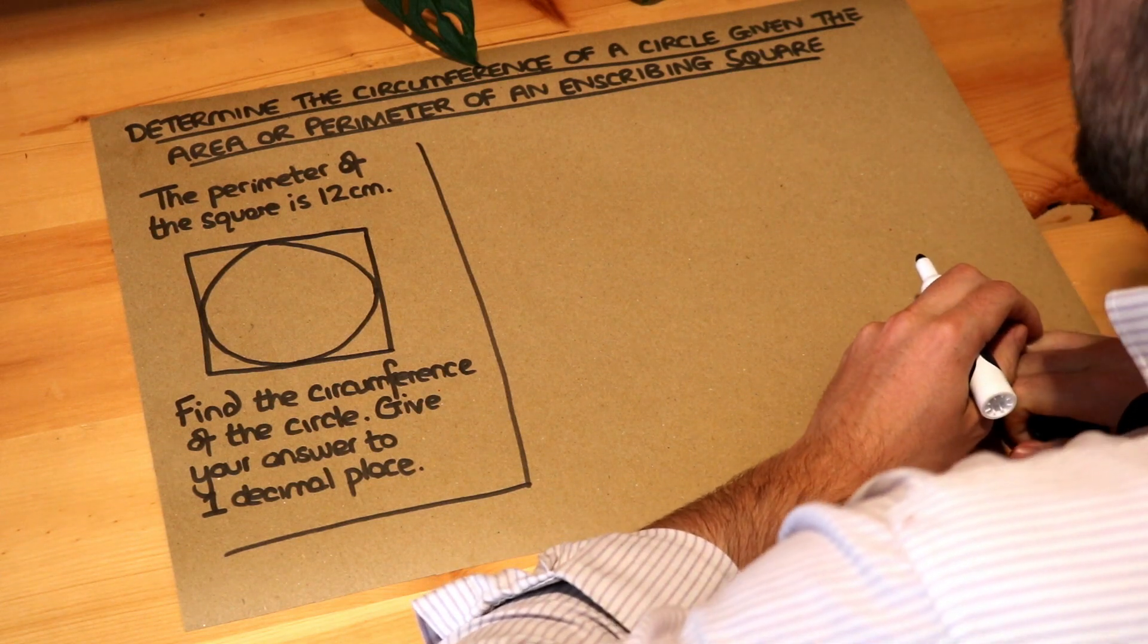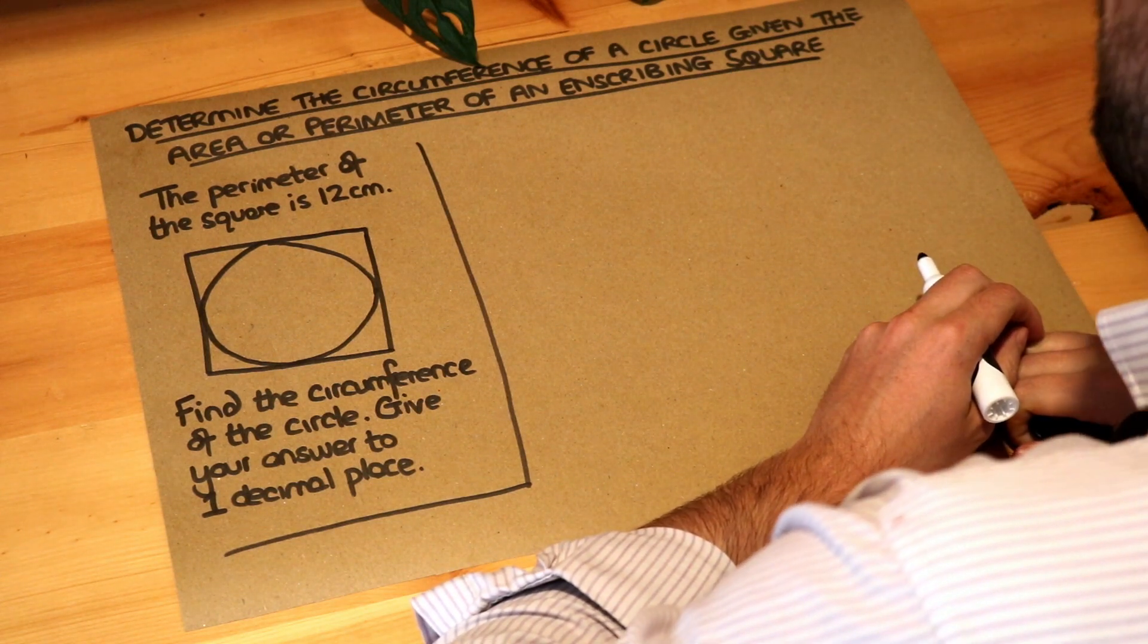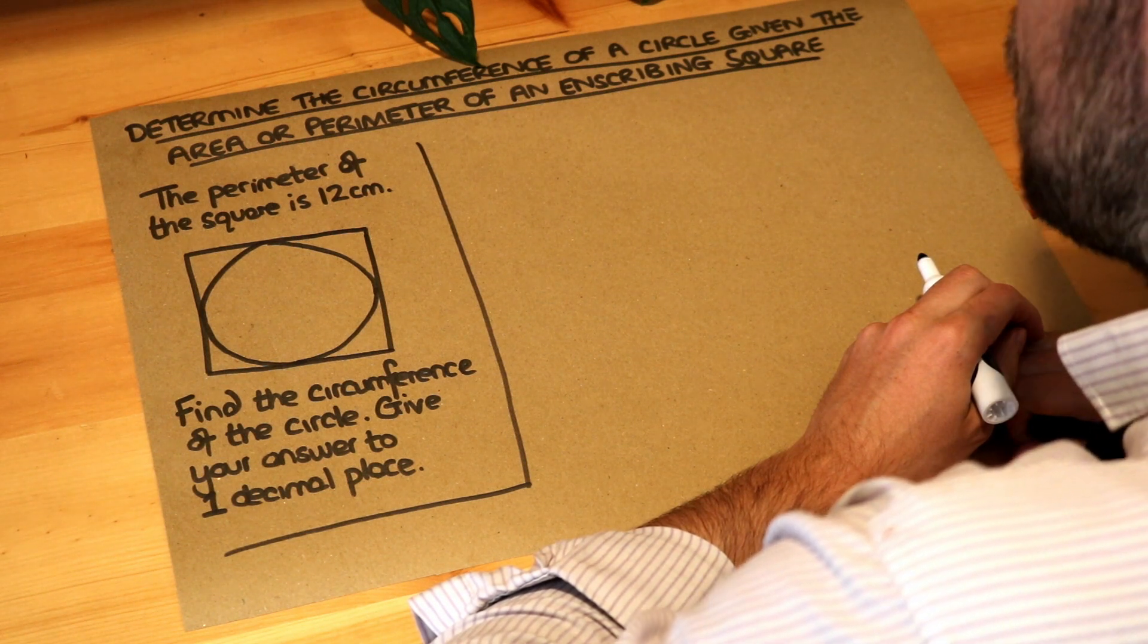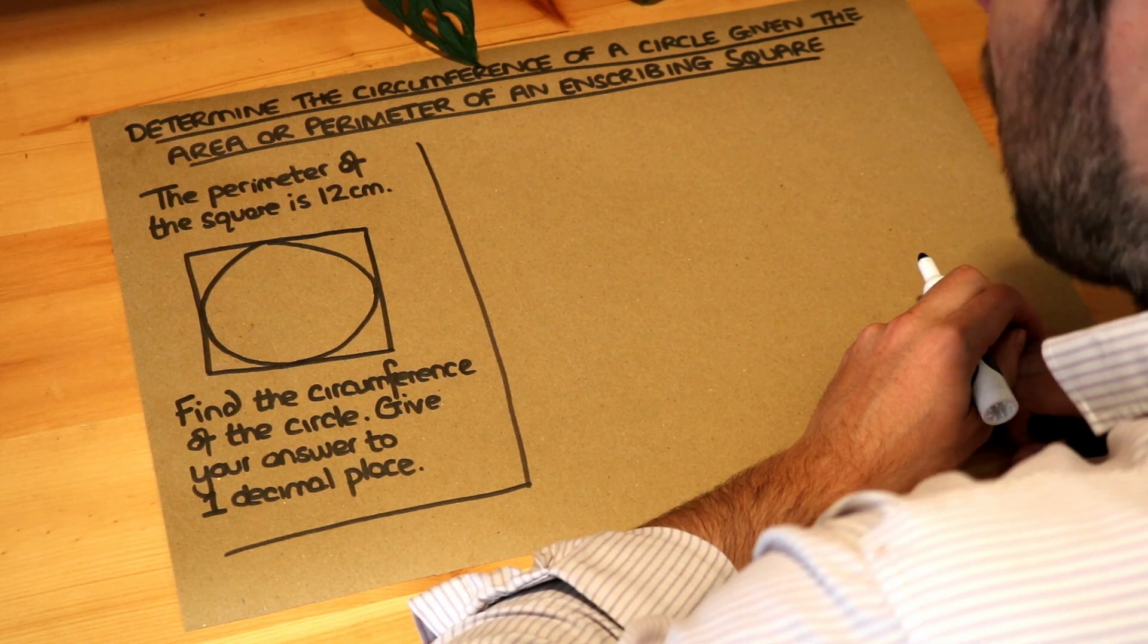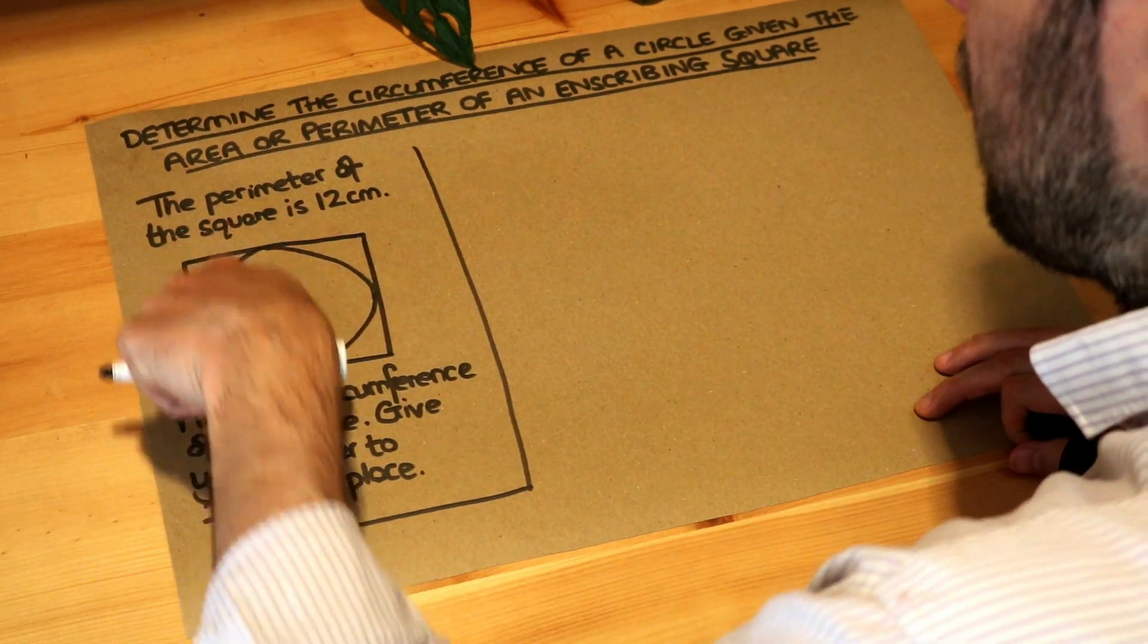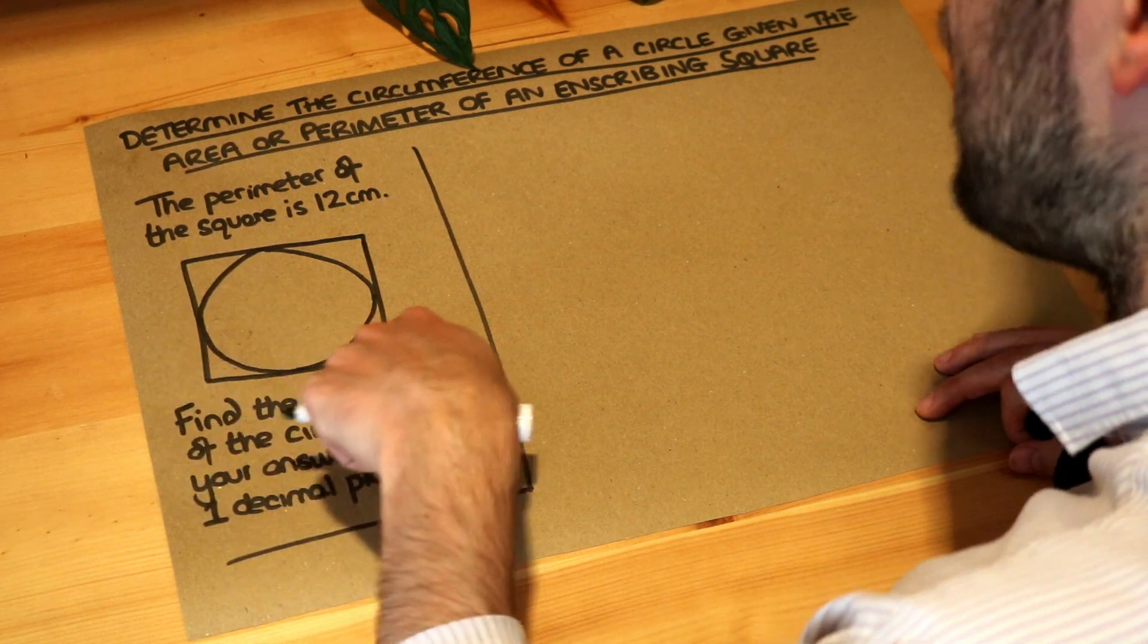Hello and welcome to this Dr Ross video on determining the circumference of a circle given the area or perimeter of an inscribing square. By inscribing square I just mean that around this circle we've got a square that goes around it that inscribes it.